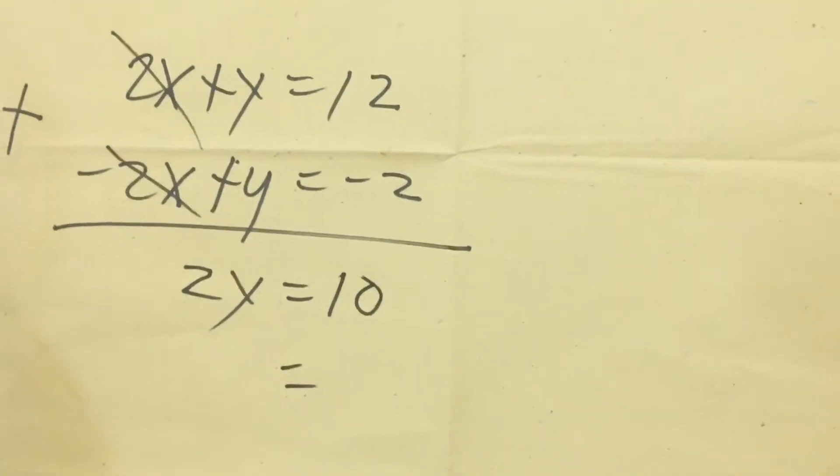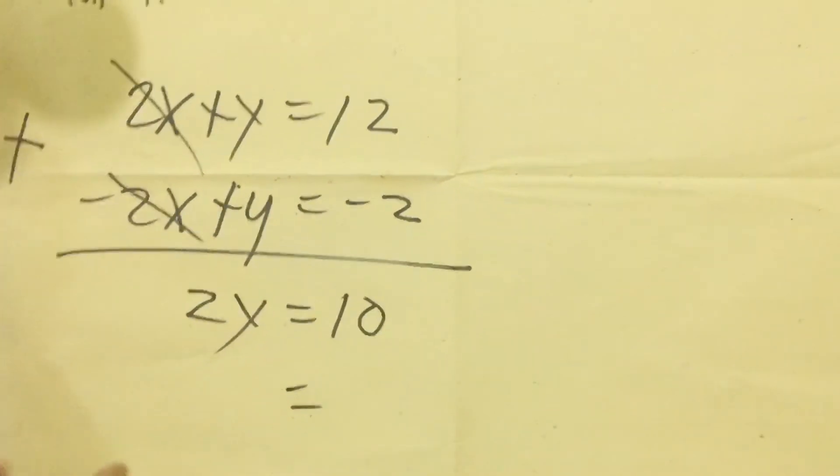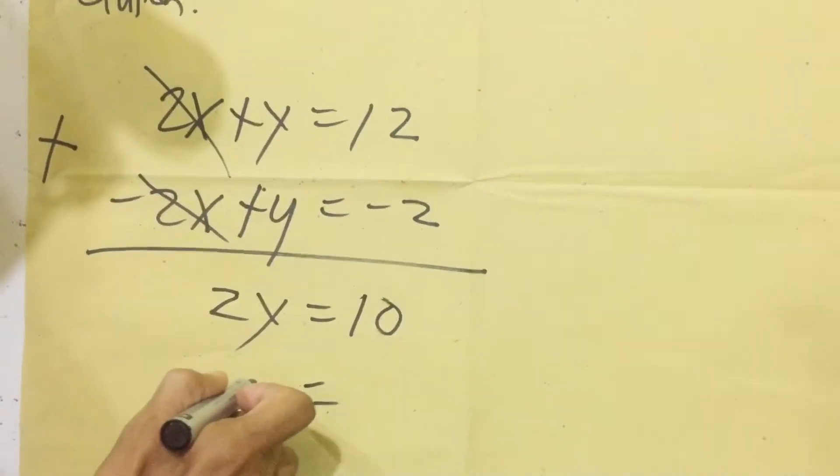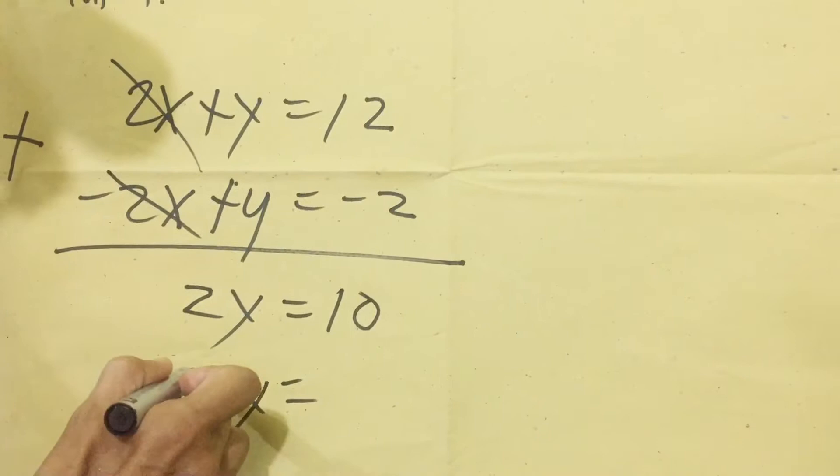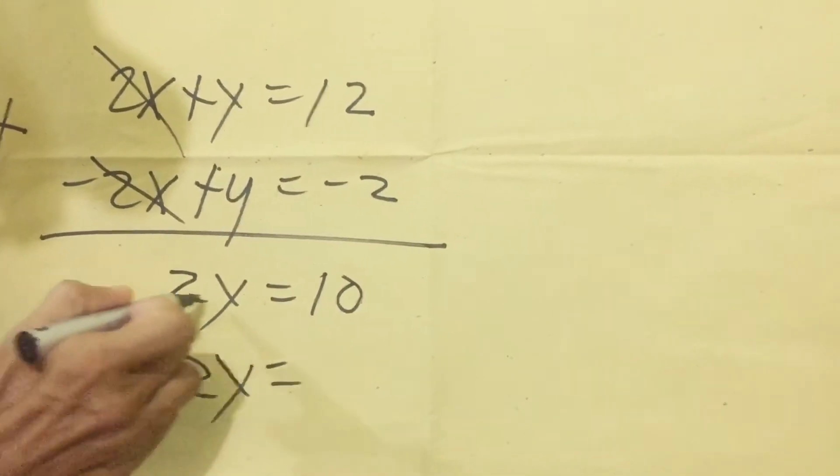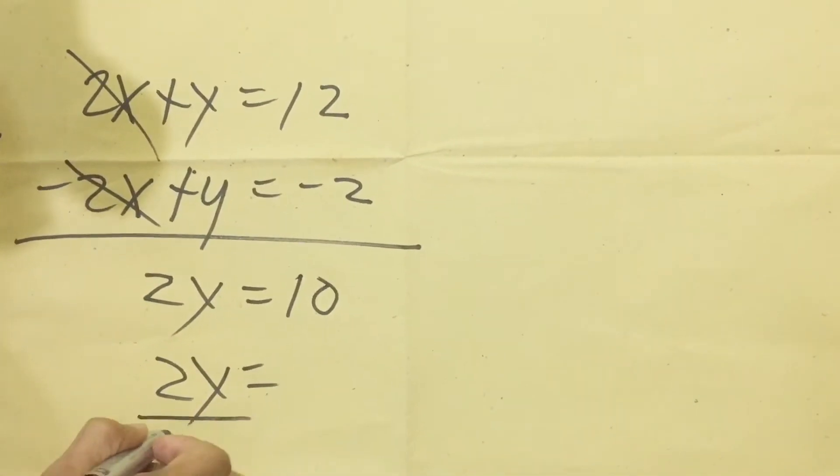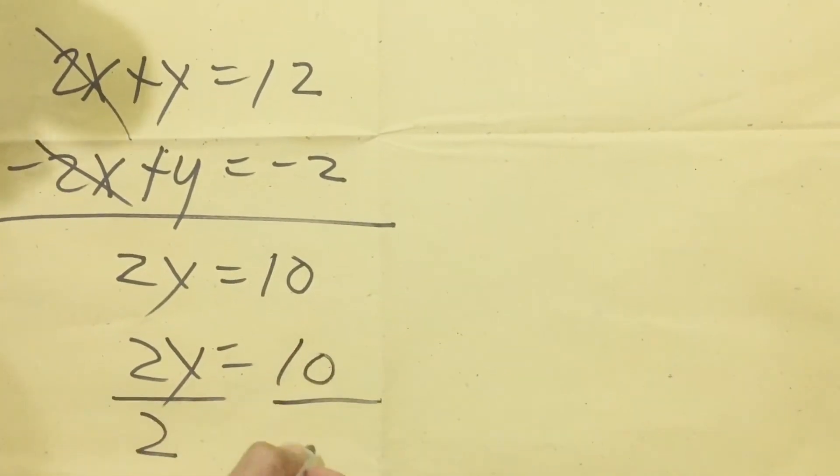Then since we're solving for the value of y, we're going to divide by 2. Whatever the numerical coefficient of y, that is the number that we're going to divide both sides.